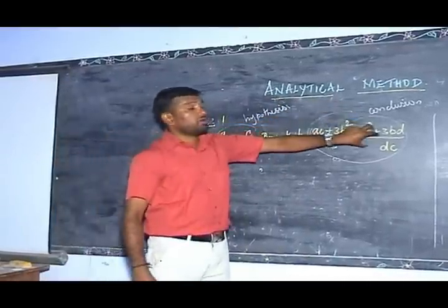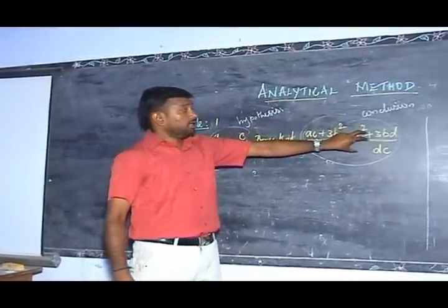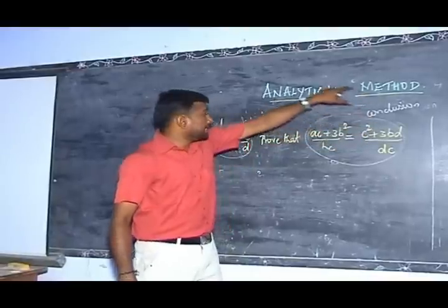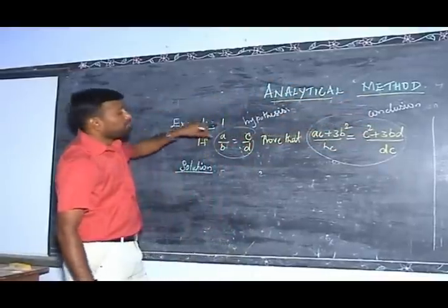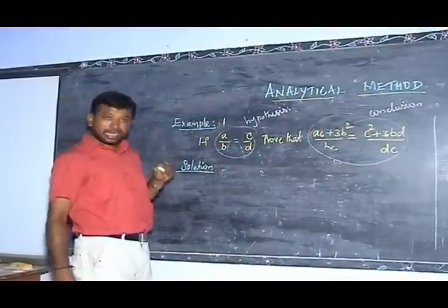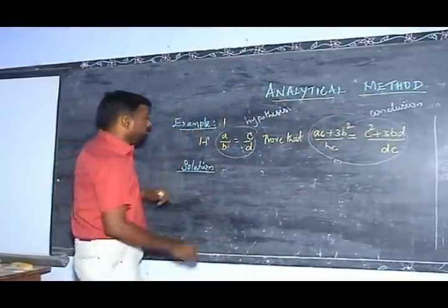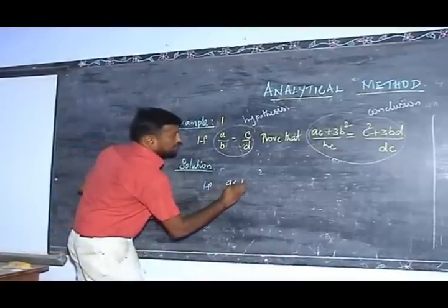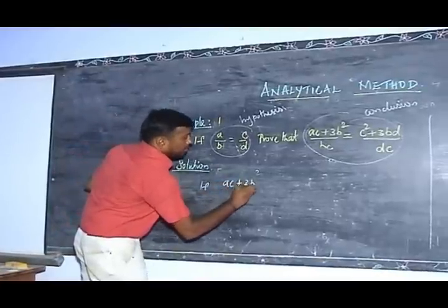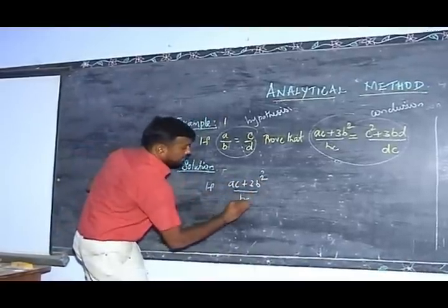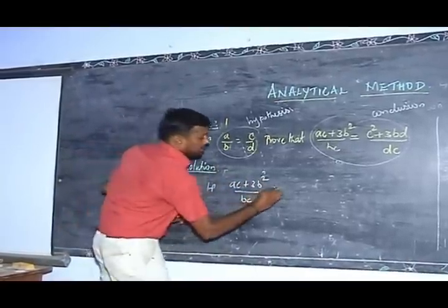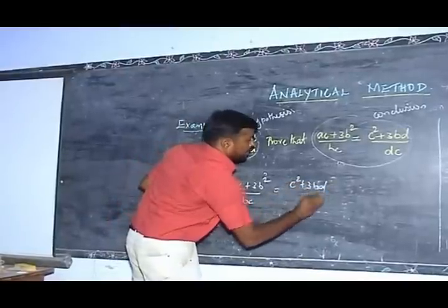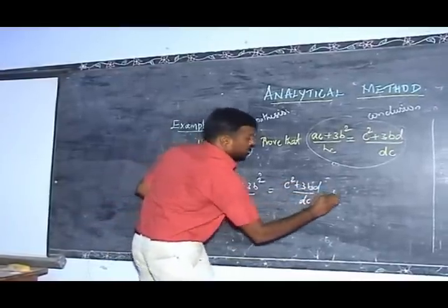First I take the conclusion part. If AC plus 3B squared divided by BC is equal to C squared plus 3BD divided by BC, I take this as Step 2.